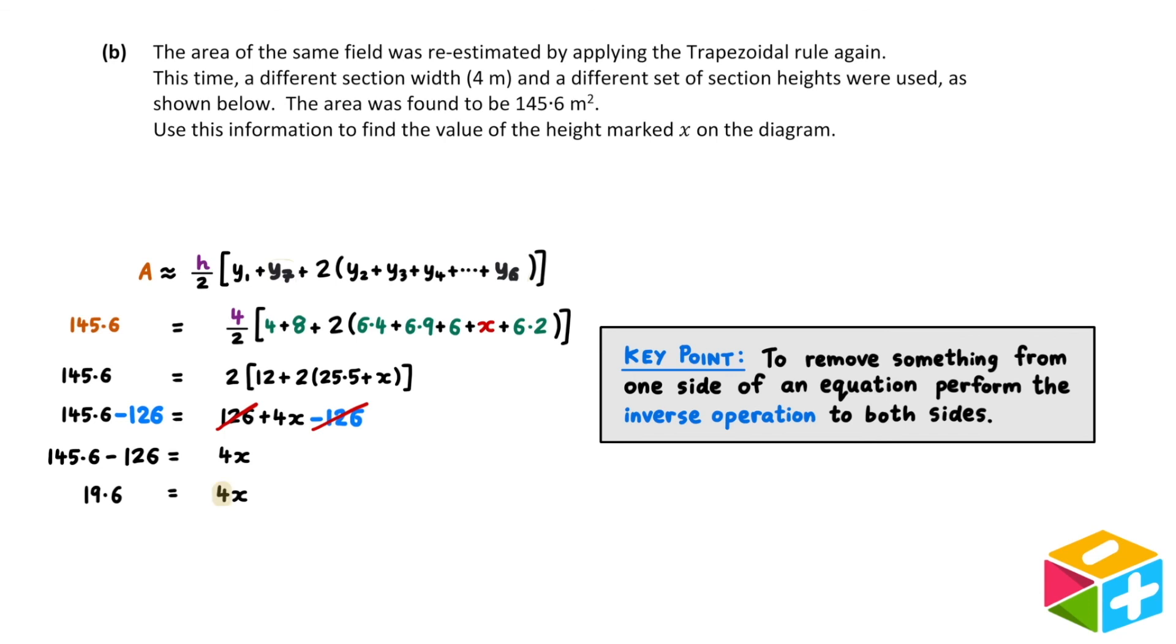Now, I'll want to remove the 4 in front of the x. This 4 represents multiplication. The inverse of multiplication is division, so I'm going to divide both sides of the equation by 4.